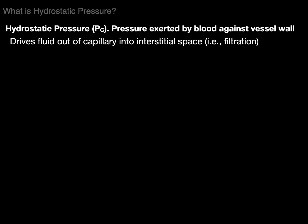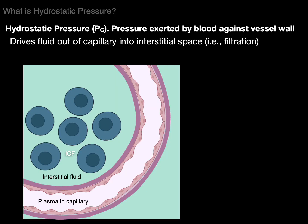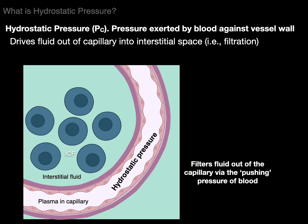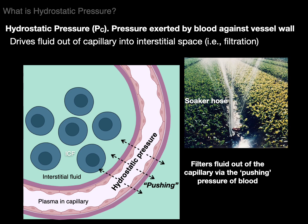What is hydrostatic pressure? It's the pressure exerted by blood against the vessel wall. It drives fluid out of the capillary into the interstitial space — filtration. There's plasma in a capillary and the hydrostatic pressure filters fluid out of the capillary via the pushing pressure of blood created by left ventricular contraction for systemic circulation. Think of it like a soaker hose in your garden.